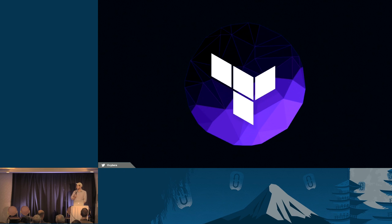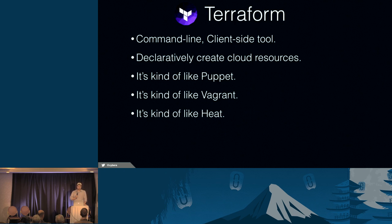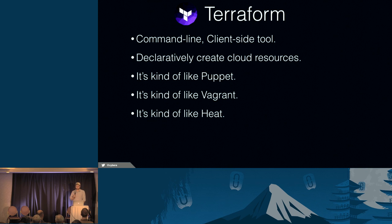Terraform is a command line tool. It's a client-side tool. It allows you to declaratively create cloud resources. If you're familiar with Puppet, it's kind of like Puppet. If you're familiar with Vagrant, it's kind of like Vagrant. And if you're familiar with Heat, it's kind of like Heat. So it's a really interesting combination of those three types of tools.